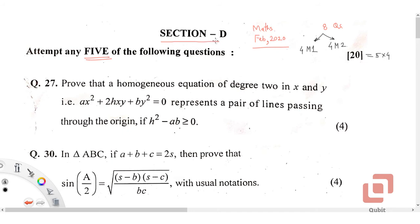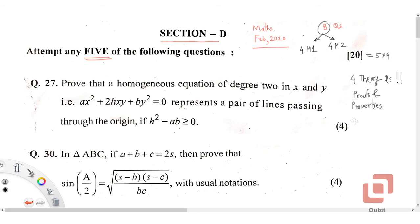The reason why Section D was a scoring section is that out of the 8 questions, 4 were theory questions — and by theory questions I mean proofs of theorems and properties. In this video we are going to talk about those 4 theory questions from Section D.